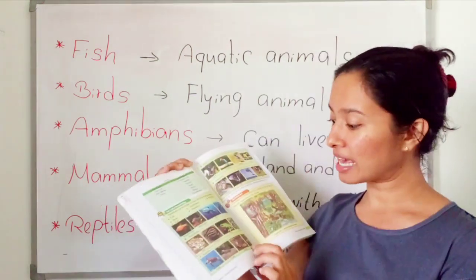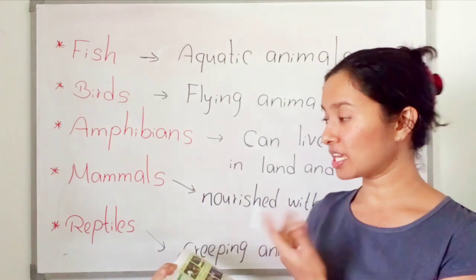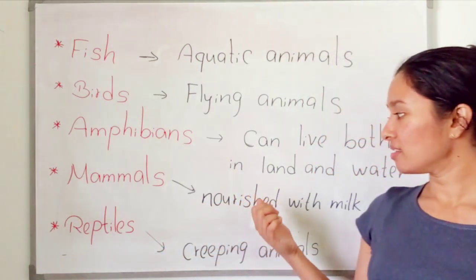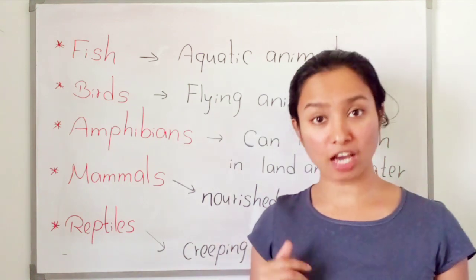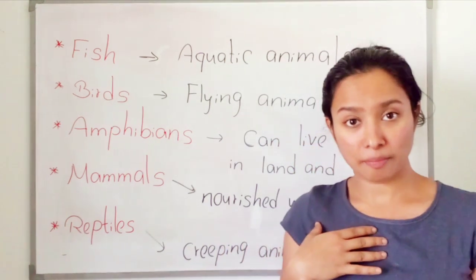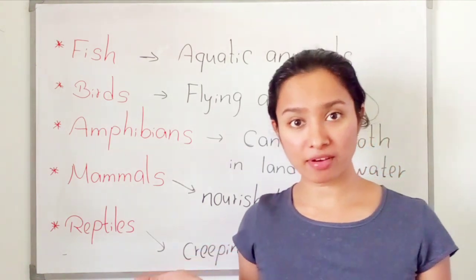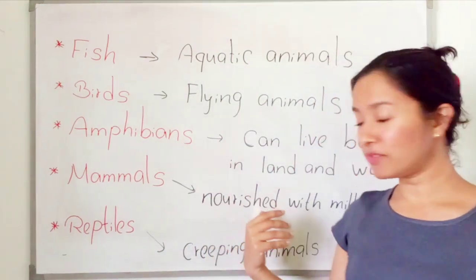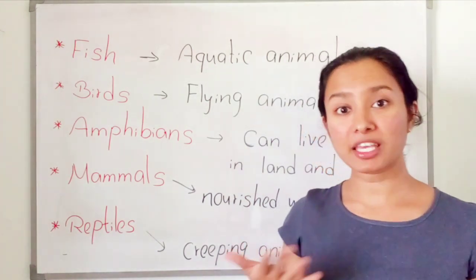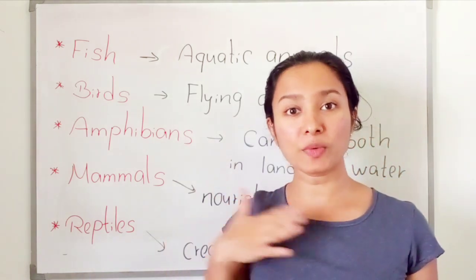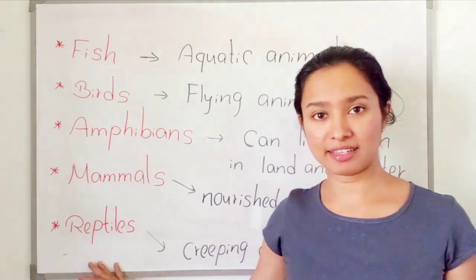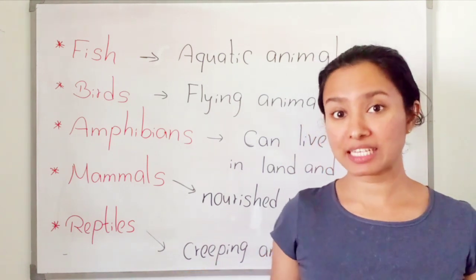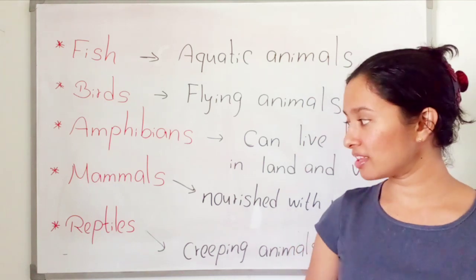Turn to page number 76 — there are pictures of many animals. Mammals are animals nourished with milk. We are mammals because we are fed milk by our mothers. The female mammals have mammary glands and feed their young with milk. Reptiles are creeping animals — mostly snakes, and also crocodiles and geckos. Those are the five main groups of vertebrates.